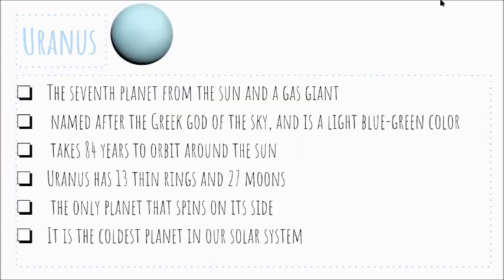Uranus is the seventh planet from the sun and a gas giant. It is named after the Greek god of the sky and is a light blue-green color. It takes 84 years to orbit around the sun. It has 13 thin rings and 27 moons, the only planet that spins on its side, and it is the coldest planet in our solar system.